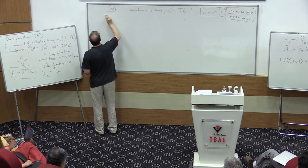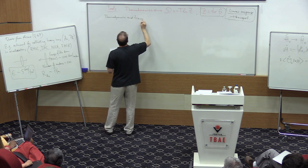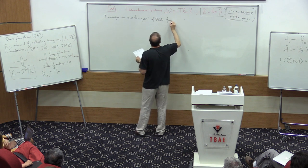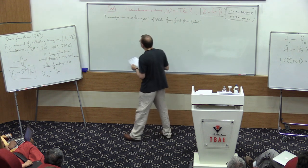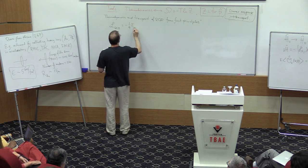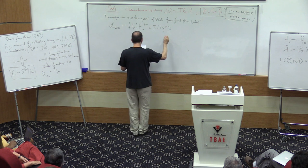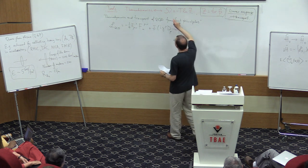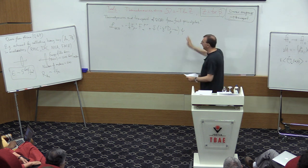The ambitious title is: thermodynamics and transport of QCD from first principles. We start with the Lagrangian of QCD, and if our tools are sufficiently powerful, this is all we need. From this we are supposed to derive everything about nuclear matter: thermodynamic properties and all transport properties including viscosity. All we need is to compute Z for thermodynamics: the trace of e^{-β(H + μQ)}, where Q is, for example, baryonic charge.